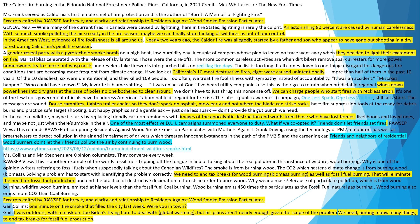A gender-reveal party with a pyrotechnic smoke bomb on a high-heat, low-humidity day. A couple of campers whose plan to leave no trace went awry when they decided to light their excrement on fire. Marital bliss celebrated with the release of sky lanterns. Those were the one-offs. The more common careless activities are when dirt bikers remove spark arresters for more power, homeowners try to smoke out wasp nests, and revelers take fireworks into parched hills on red-flag fire days. It all comes down to one thing: disregard for dangerous fire conditions that are becoming more frequent from climate change.